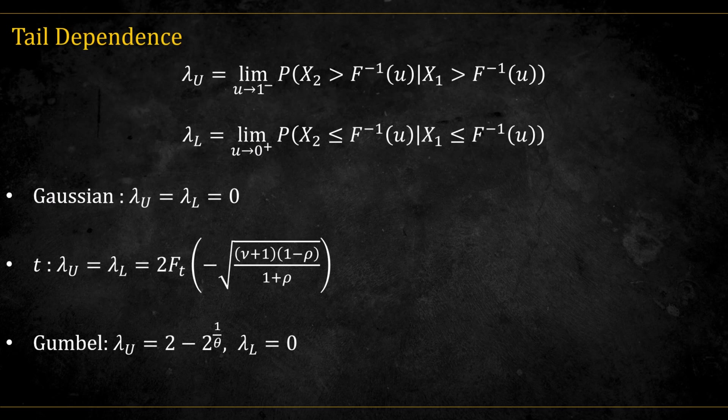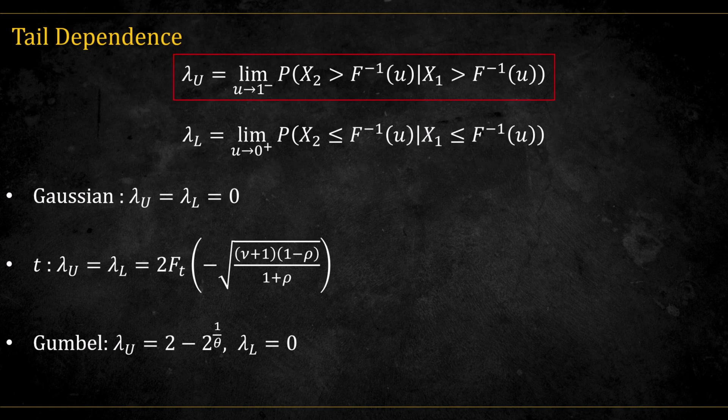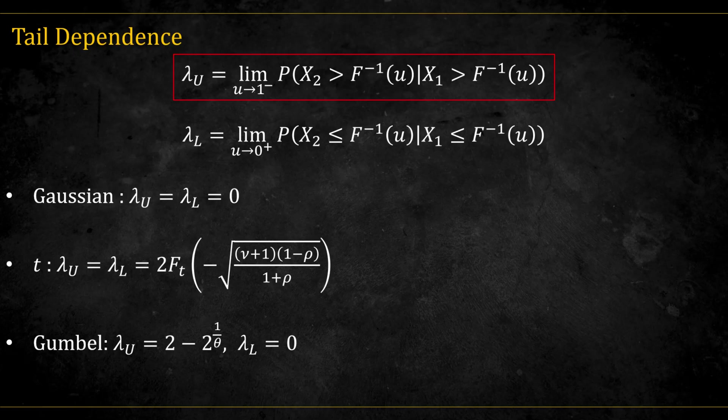We mentioned tail dependence, but the concept actually has a formal definition, shown here by these two formulas. The upper tail dependence measures the probability that one variable exceeds a high quantile, given that the other variable also exceeds that same quantile, as we take the limit of U to 1.